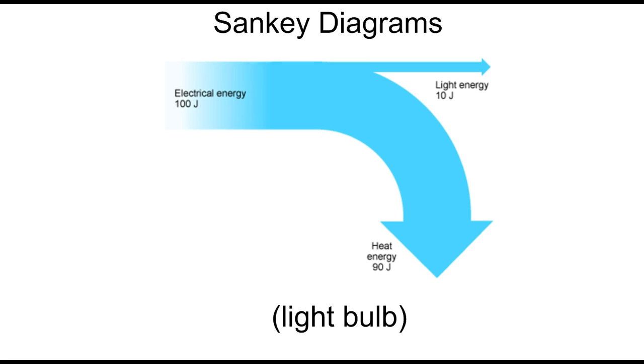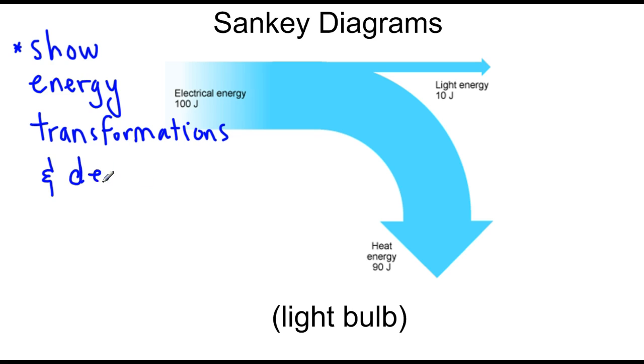One of the ways to represent these transformations is using Sankey diagrams. Sankey diagrams show or represent energy transformations. In particular, they do a really nice job of showing the degraded energy, which is the energy we lose to heat. It's no longer useful.